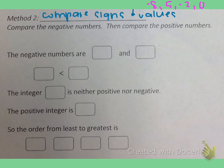But now we're just going to order them using a different method. So if we're comparing the numbers, the negative numbers are negative 8 and negative 2.